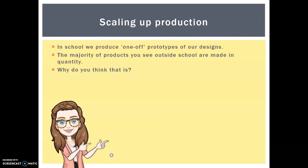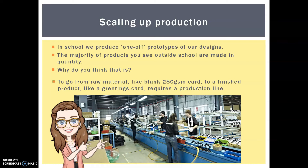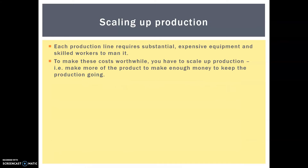In school we produce one-off prototypes for our non-exam assessment coursework, but of course the majority of products outside of school are made in quantity — whether batch, mass produced, or more. Because we're going from raw materials to a finished product, it requires a production line. Each production line requires substantial, expensive equipment and skilled workers to man and maintain it. To make these costs worthwhile you need to scale up production — making more of the product to make enough money to keep production going. We call this economies of scale. When we're talking about the economy we're talking about money, so economies of scale means trying to scale that up.